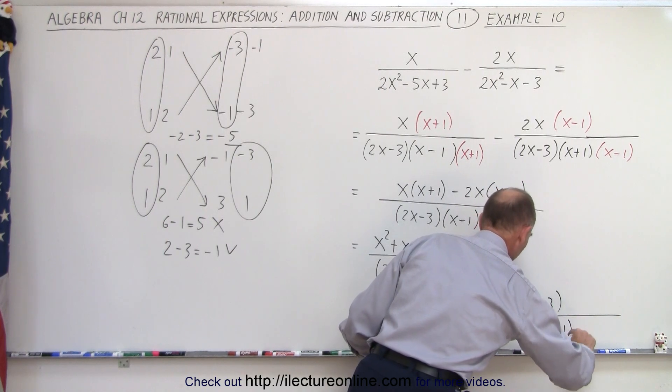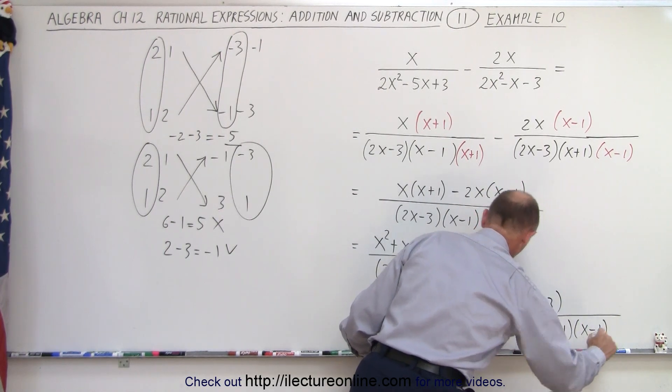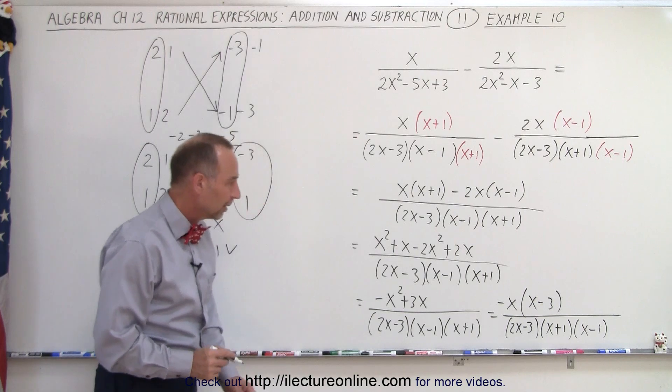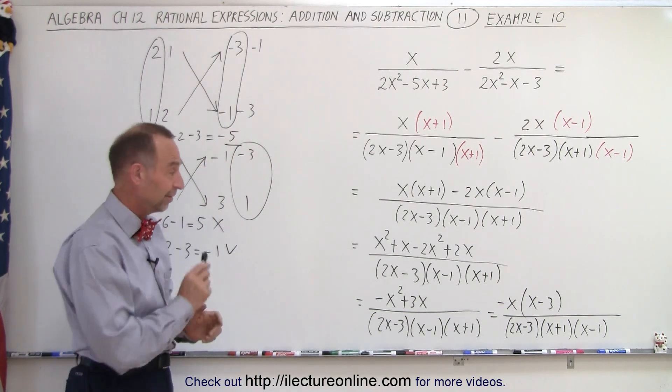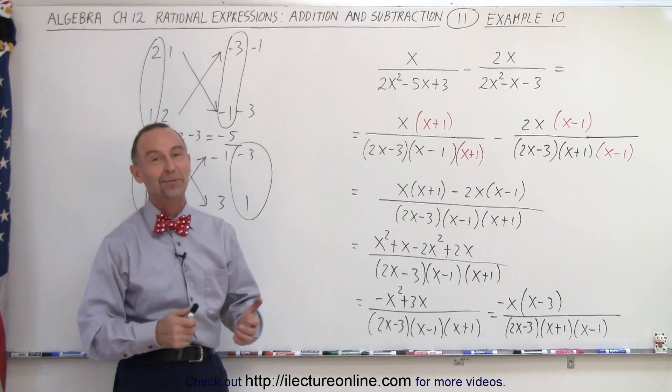x plus 1, and x minus 1. And that's the simplest form in which we can write it, which means we are done. That's how it's done.